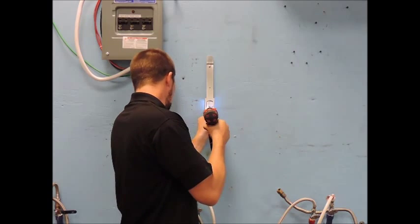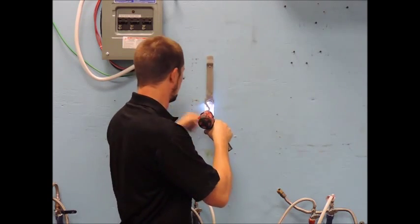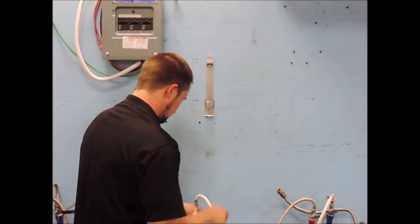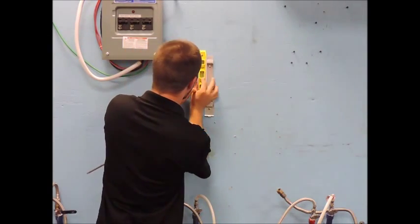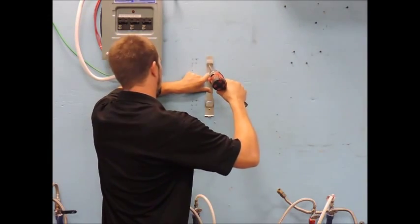First, mount the bracket vertically on a flat surface, such as a board or a wall, larger than the unit itself. Using a level will help keep the heater bracket straight. Make sure the bracket is secure by utilizing a stud or the provided wall anchors.